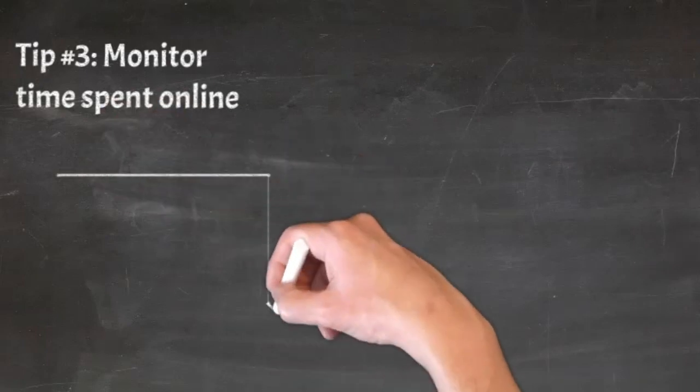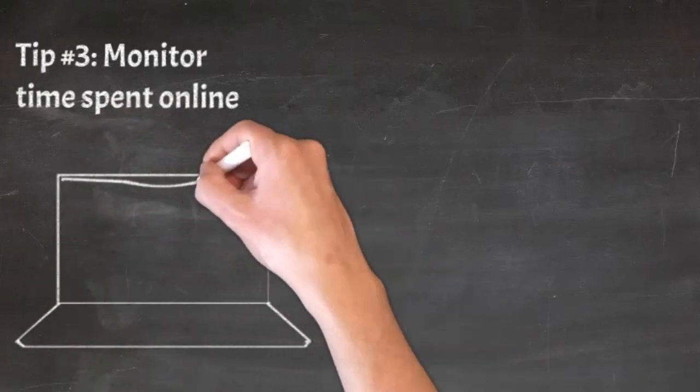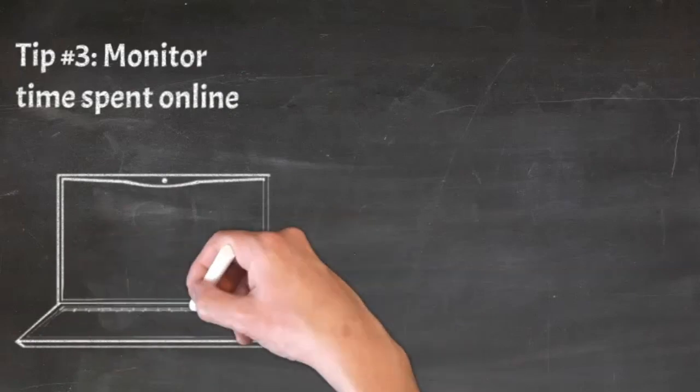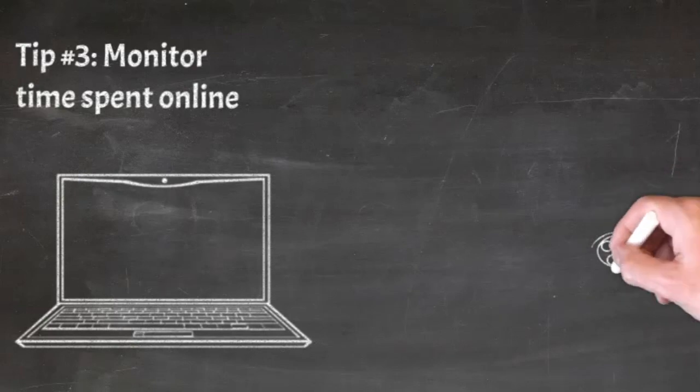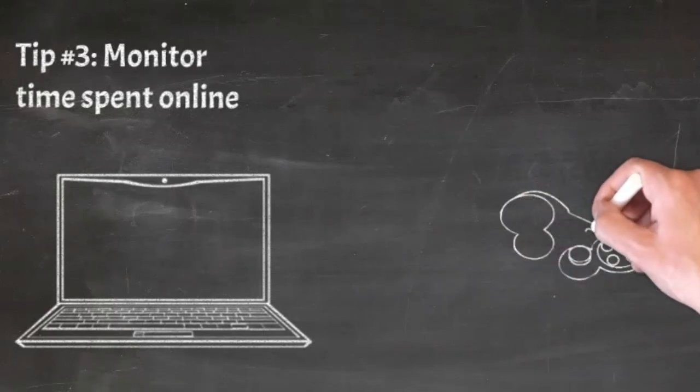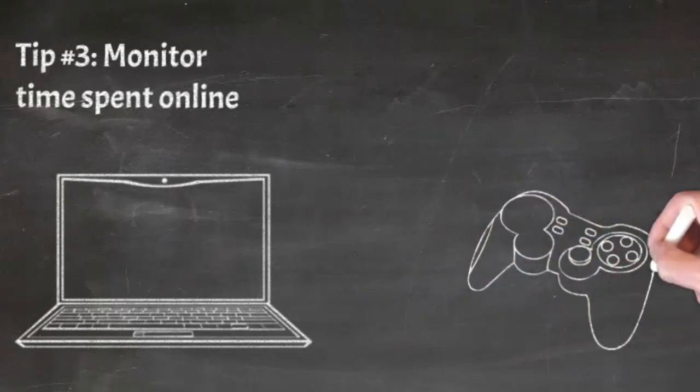Tip number three: be aware of the amount of time your children are spending online and what websites and/or apps they are using. The CDC cautions against children spending more than two hours per day online. The current national average for teens is over nine hours of time spent online.